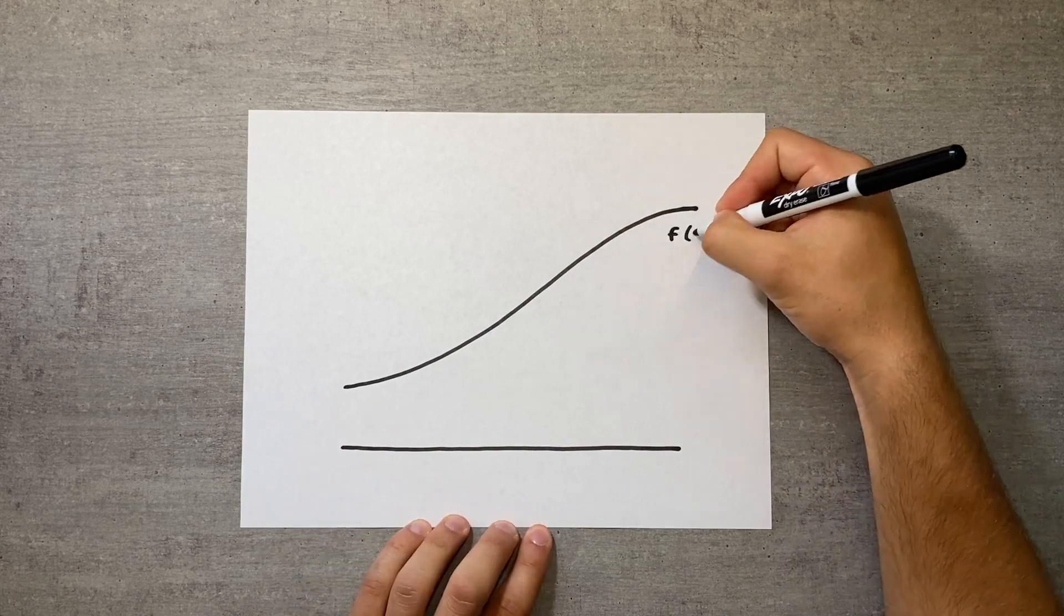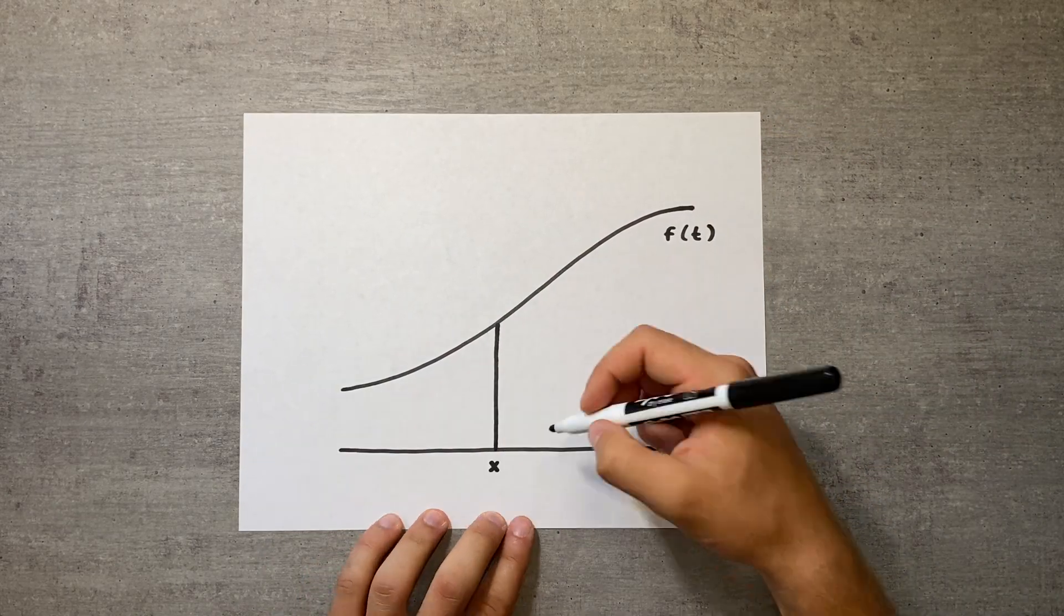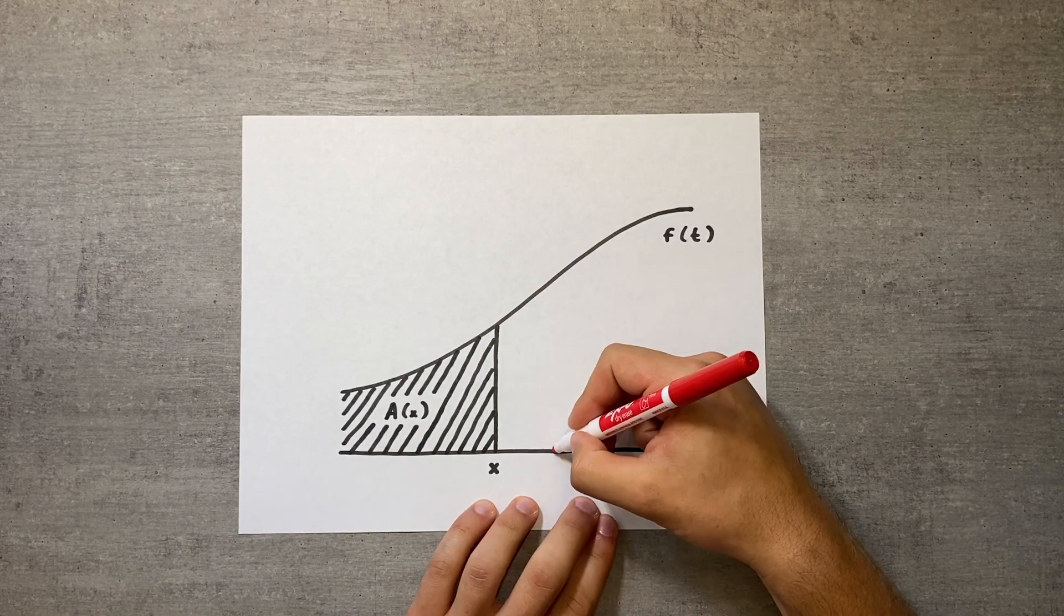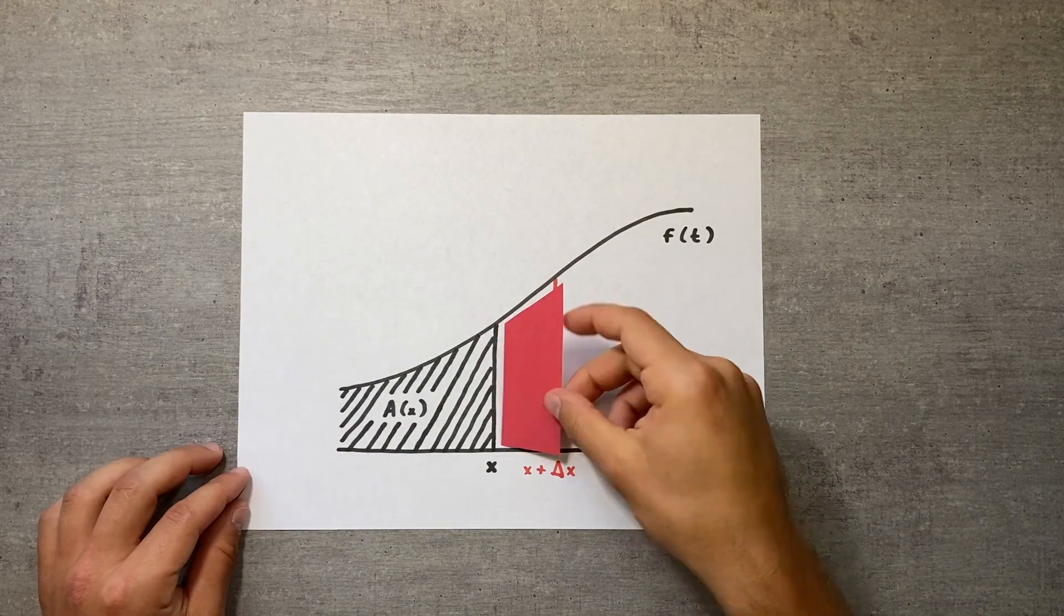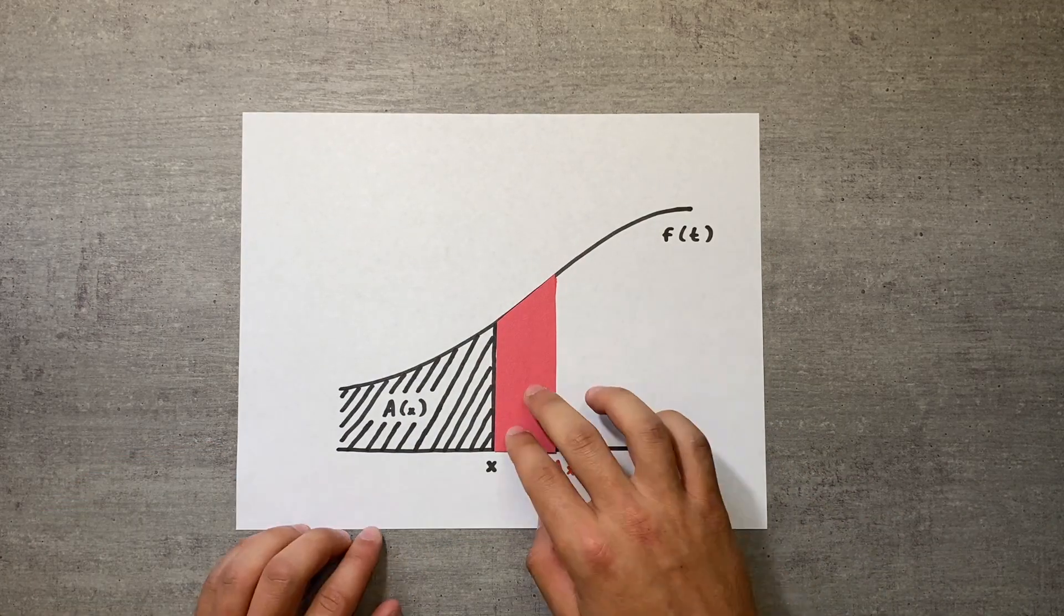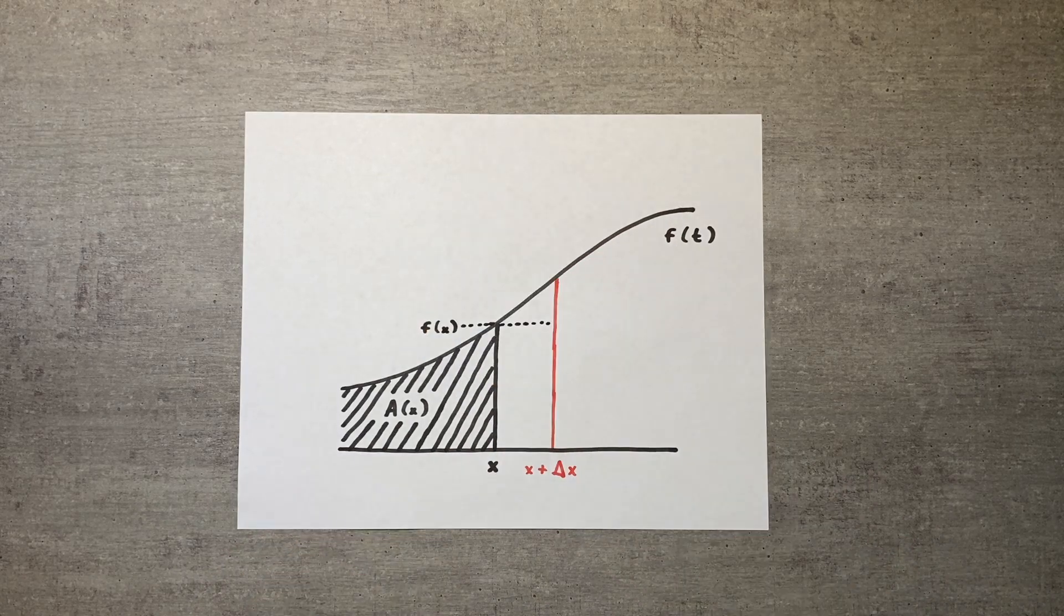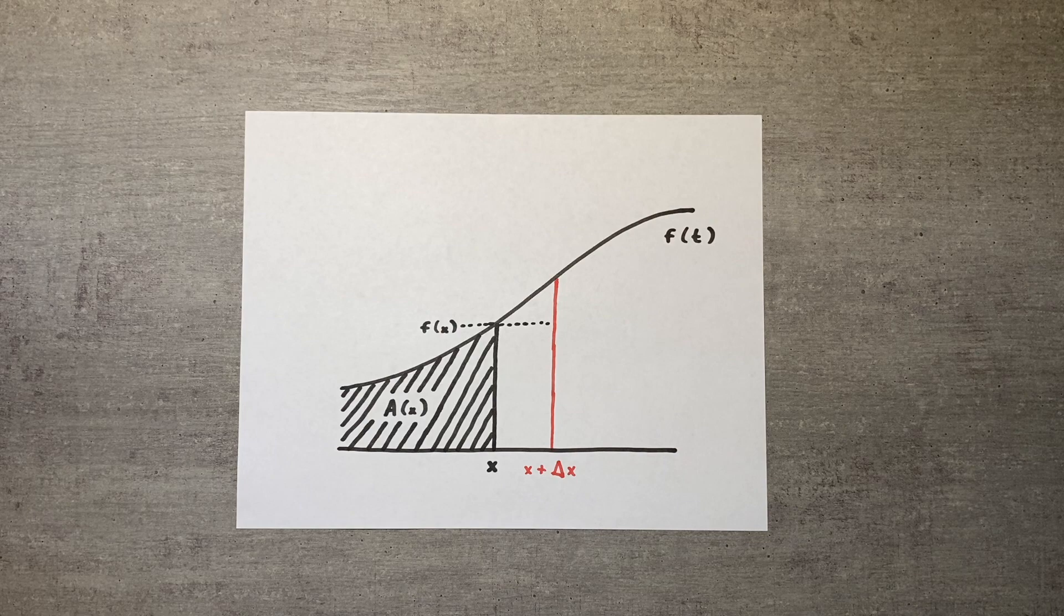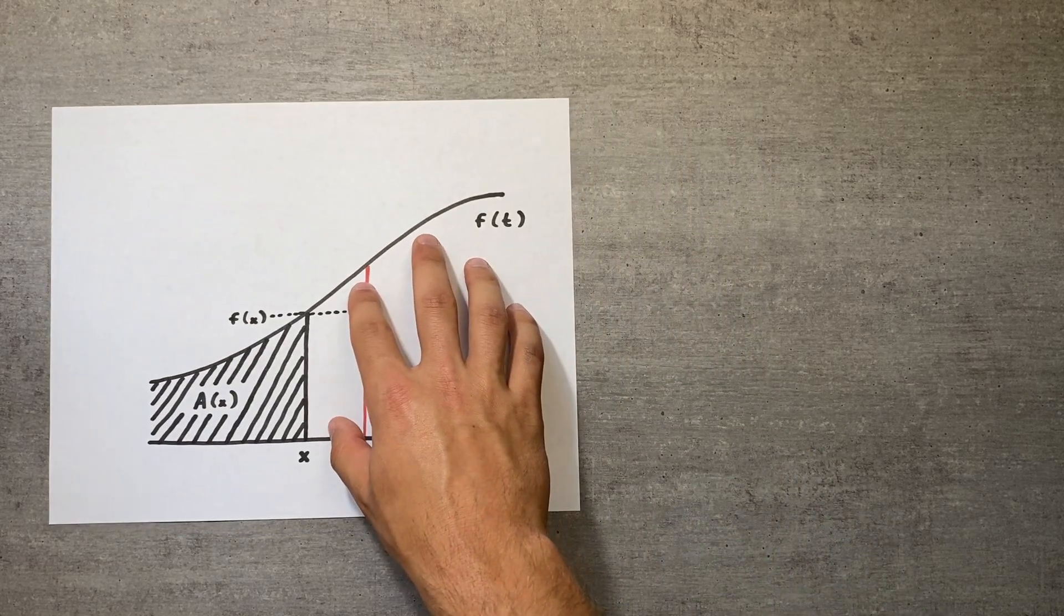We begin proof 2 by changing x by a small amount, delta x, and visualizing the effect this has on a. We can examine the exact change in the area function, but we can also approximate it using a rectangle. These two regions have different areas, but as delta x gets smaller, the areas become closer and closer to each other.